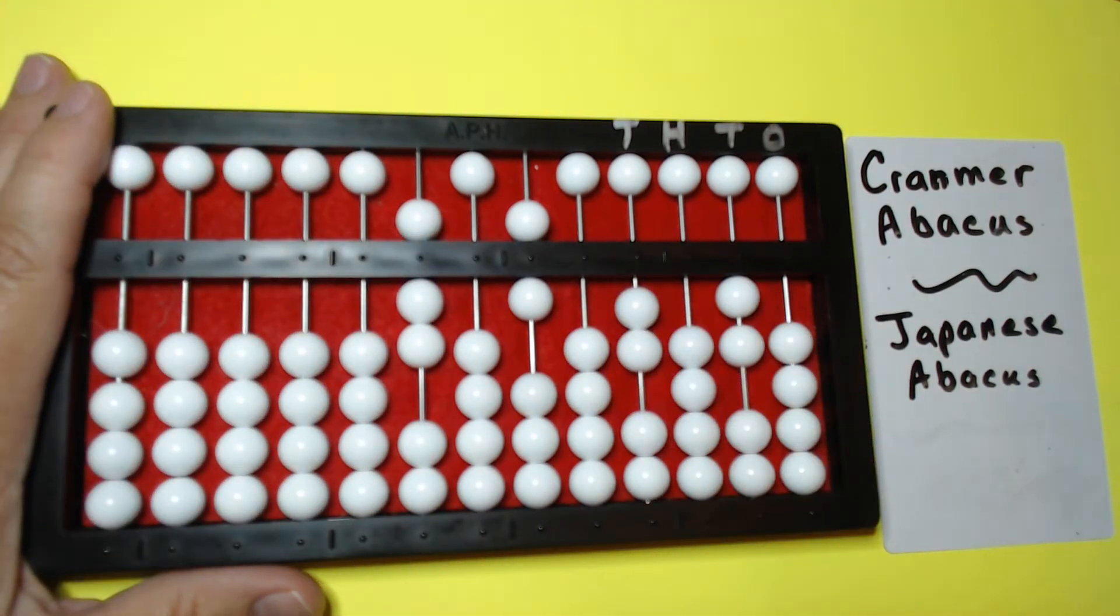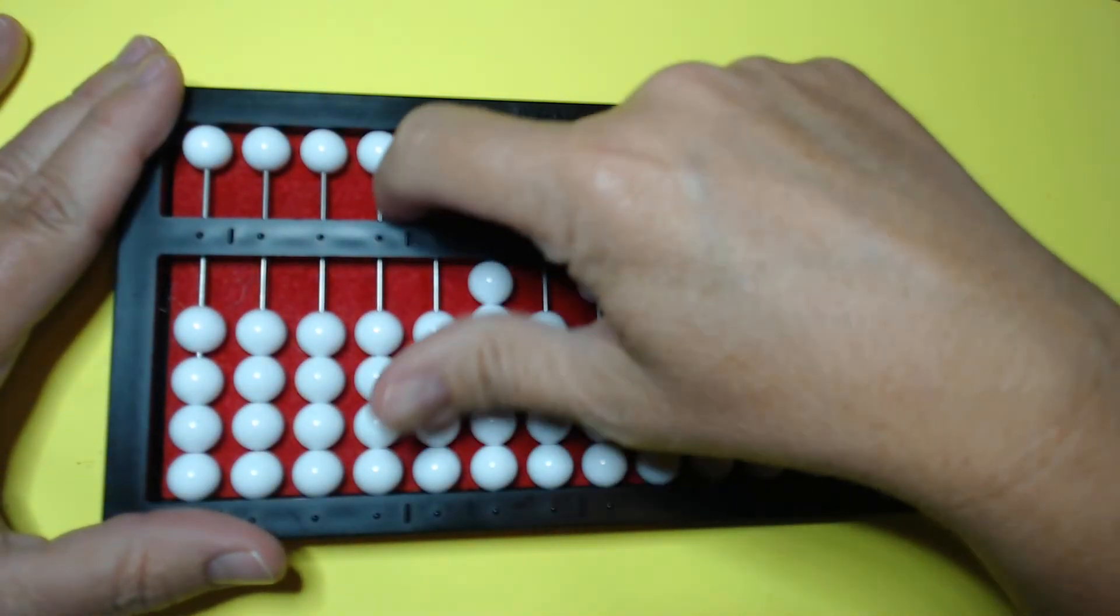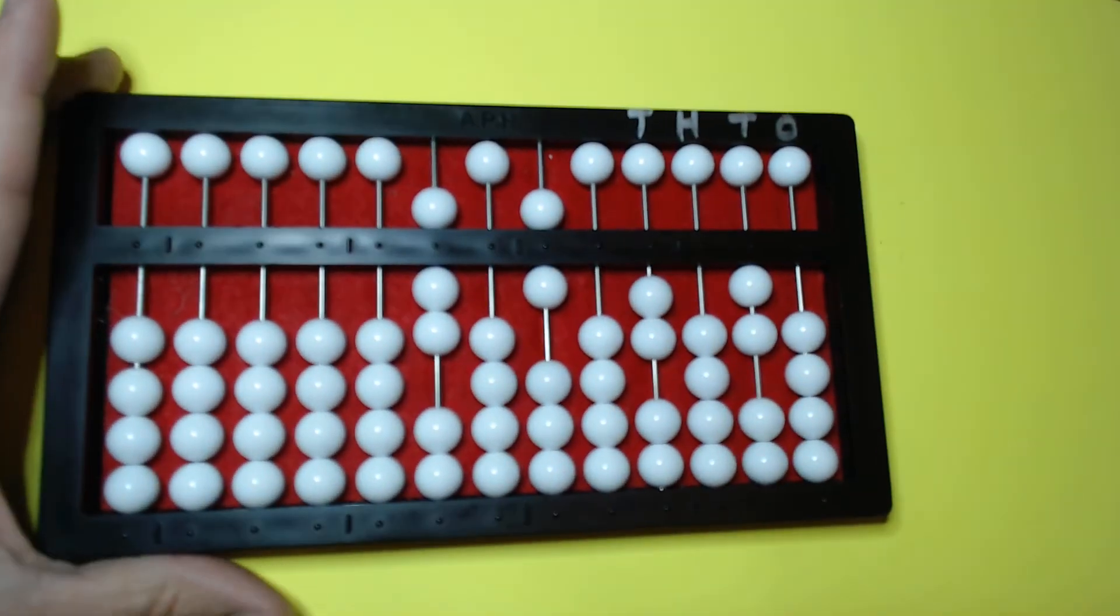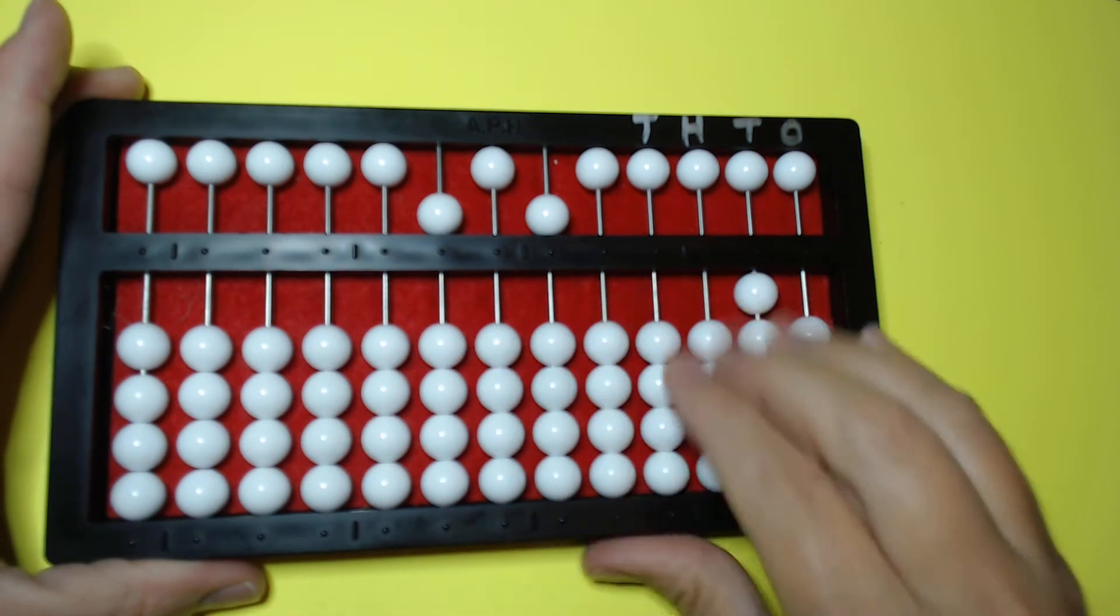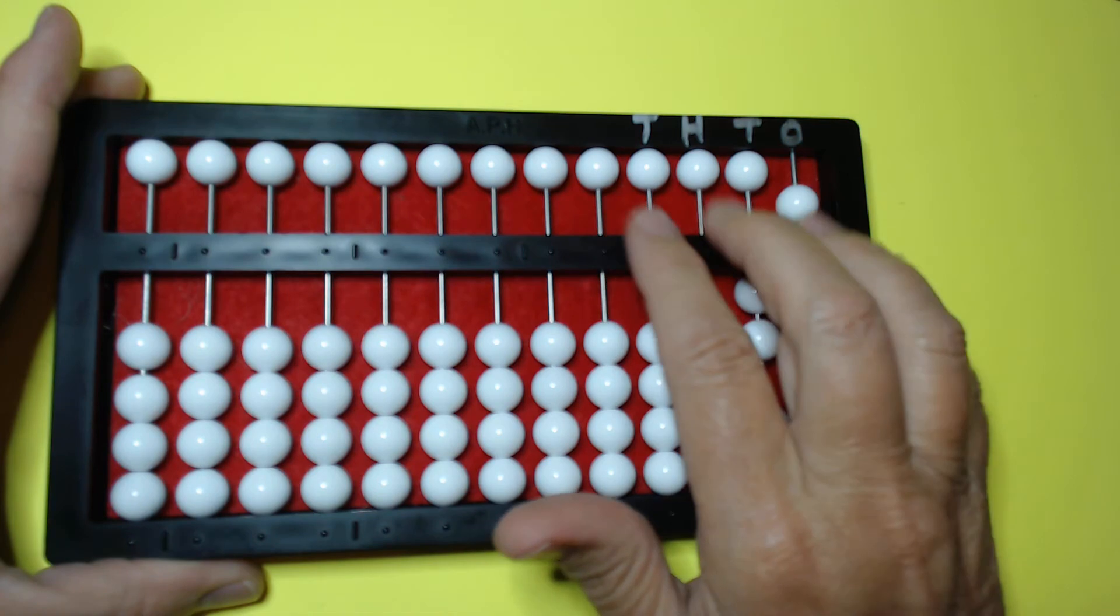The Cranmer Abacus is a modified Japanese abacus and it is modified to use with blind or visually impaired students. It has felt backing so whenever the abacus is moved the beads don't slide around. It also has these textual marks here so the kid can feel the place value.